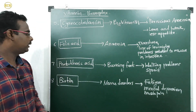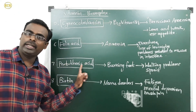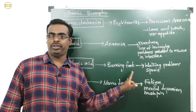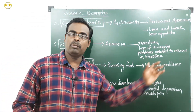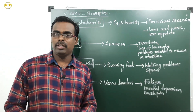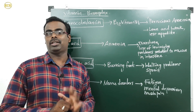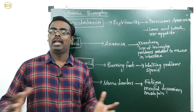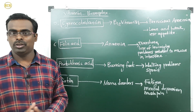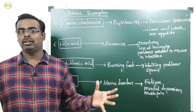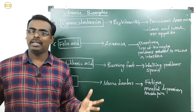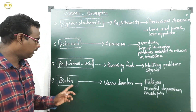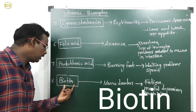The seventh B complex vitamin is pantothenic acid. Its deficiency causes burning feet syndrome — walking problems and sprain, which is severe pain at the ankles and wrists due to twisting of the ligament. The ligament is connective tissue that connects two bones at the joint.